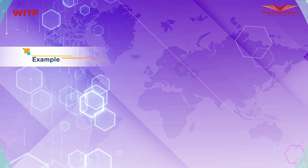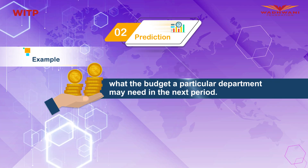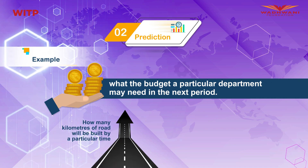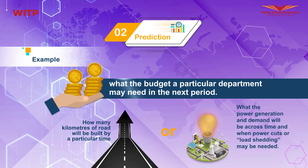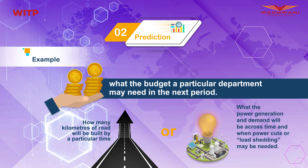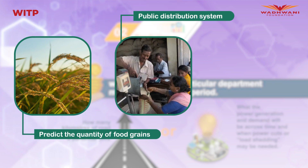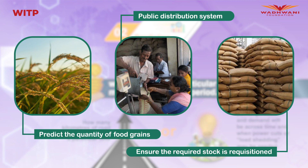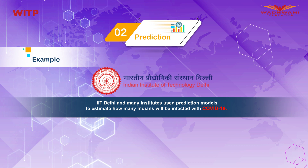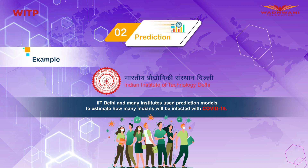Predictive analytics is now being applied in a wide range of areas including defense, security, healthcare, and citizen services. Examples of predictions include: what budget a particular department may need in the next period given the trend; how many kilometers of road will be built by a particular time; what the power generation and demand will be across time and when load shedding may be needed; and predicting the quantity of food grains needed in the public distribution system. IIT Delhi and many institutes use prediction models to estimate how many Indians will be infected with COVID-19.